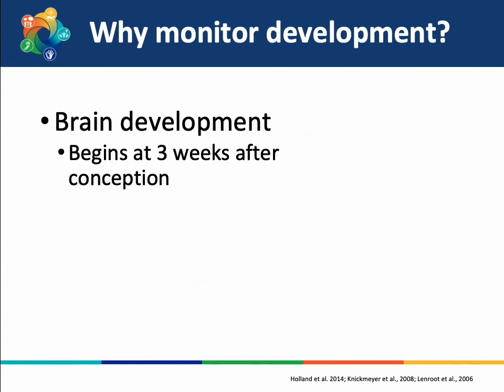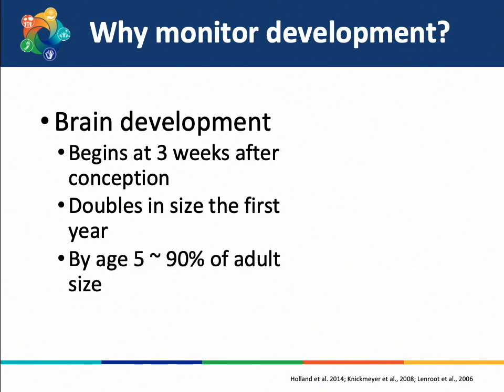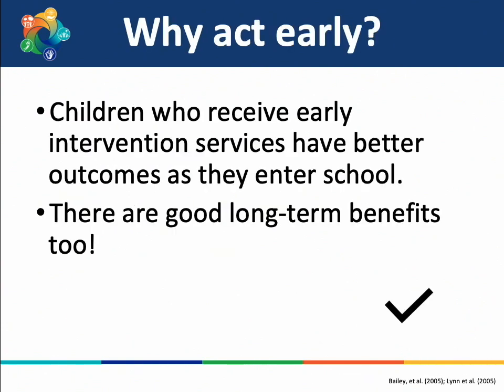Brain development starts when a child is a fetus in the mother's womb. When a baby is born full term, the size of their brain is about one-third the size of an adult brain. Following birth, the brain grows significantly in the first years of life — by age five, it is about 90% of the size of an adult brain. Therefore, it is important to get children's supports and services as early as possible when their brain is still developing, as the sooner the better for long-term growth and development.